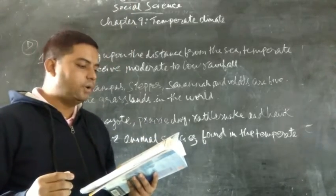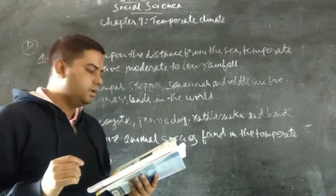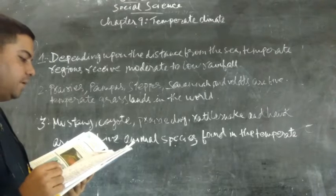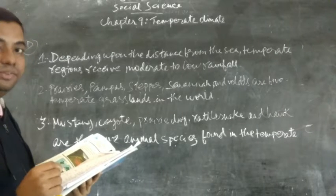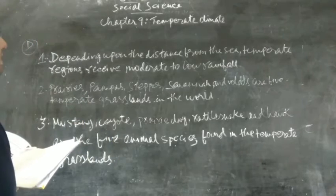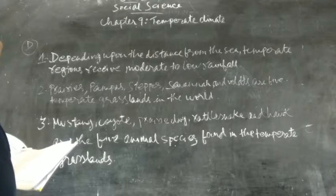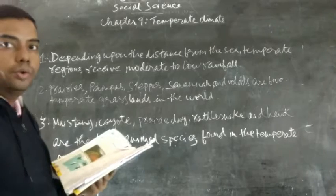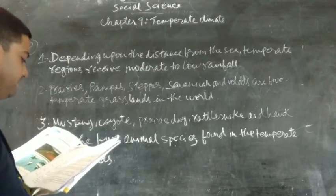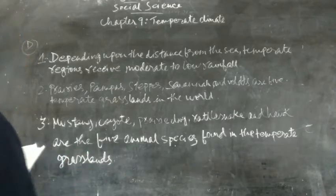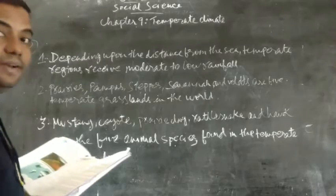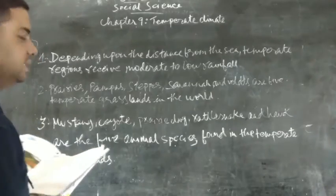Now we come to question D: Answer the following in few words. Question 1: Which is the main factor that determines the amount of rainfall that every region receives? The answer is: depending upon the distance from the sea, temperate regions receive moderate to low rainfall. Question 2: Name any five temperate grasslands in the world. The answer is: prairies, pampas, steppes, savannah, and veld are five temperate grasslands in the world.